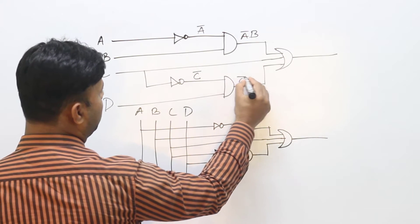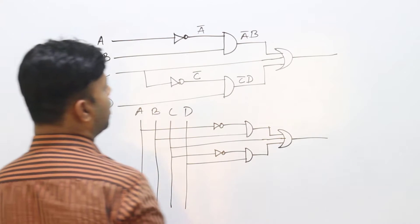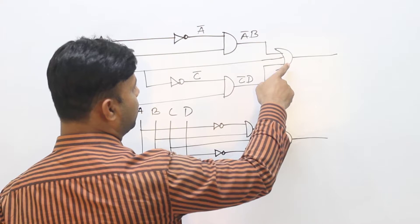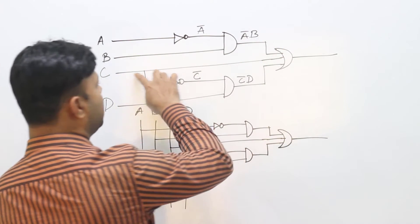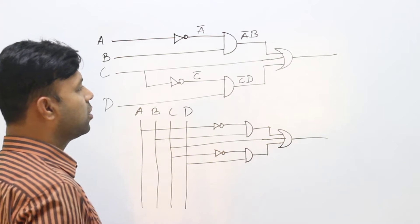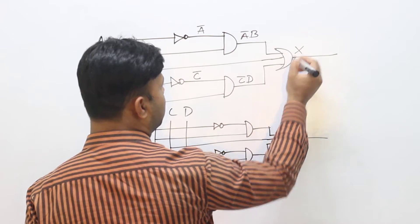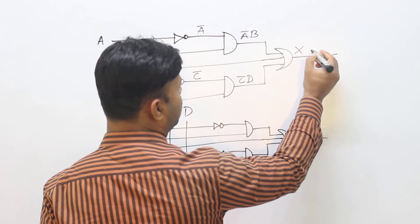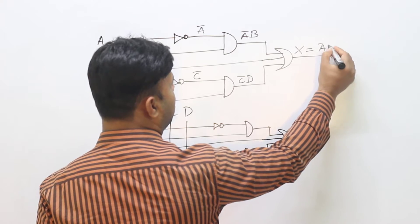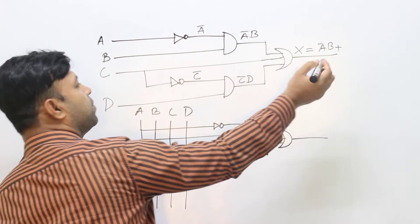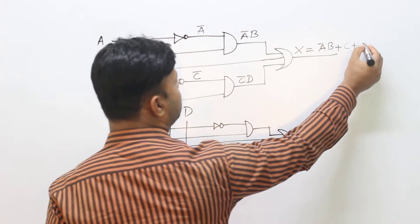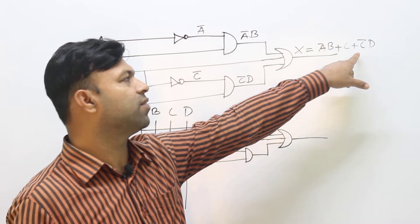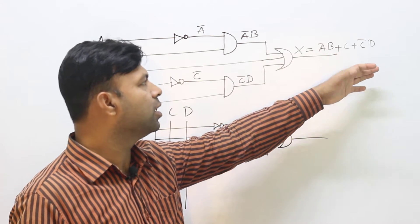Going through the inputs: we have inputs A, B, C, and D. The output X is equal to A NOT B plus C plus C NOT D. Here is a logical function from which we will build a logic circuit.